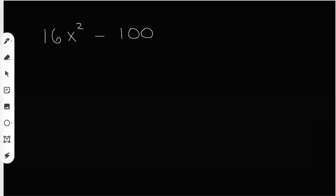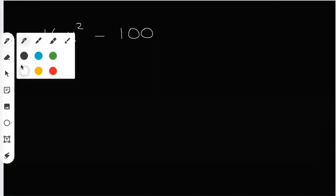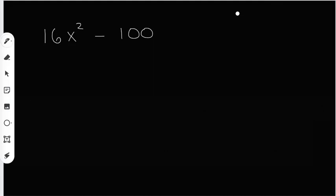When we do difference of squares, sometimes we run into a problem where we can take a GCF out first. So what I'm going to do is I'm going to take out a GCF. That is the greatest common factor.